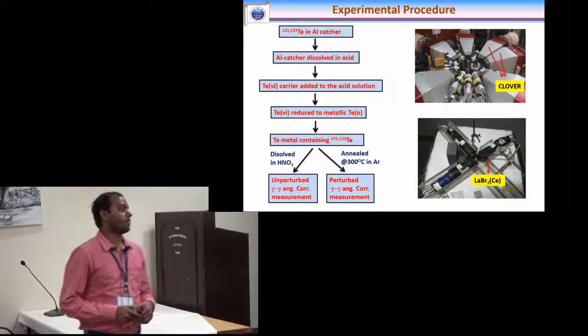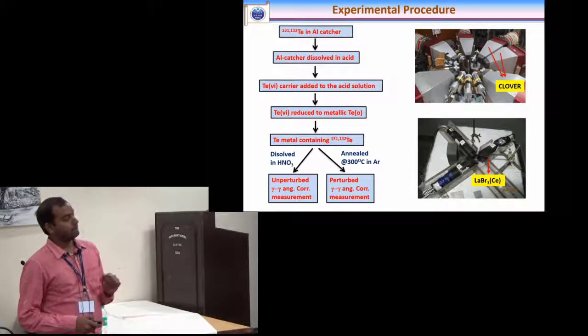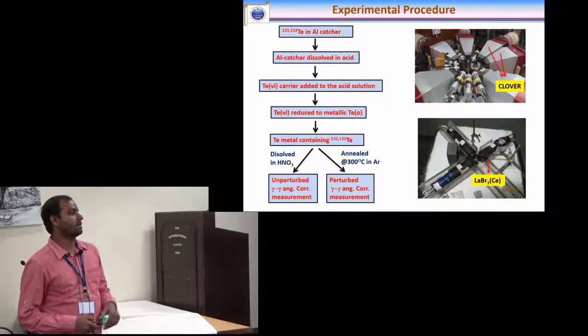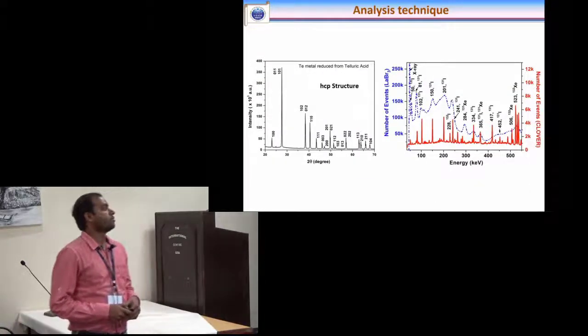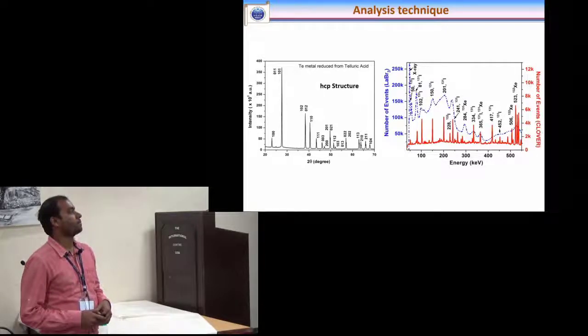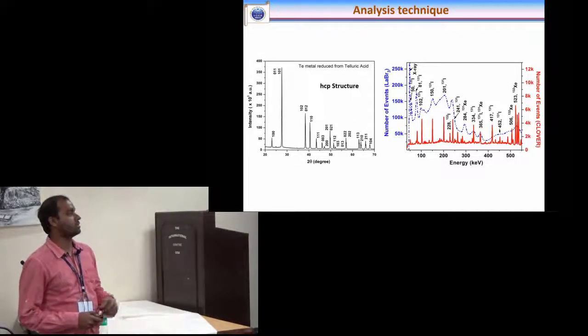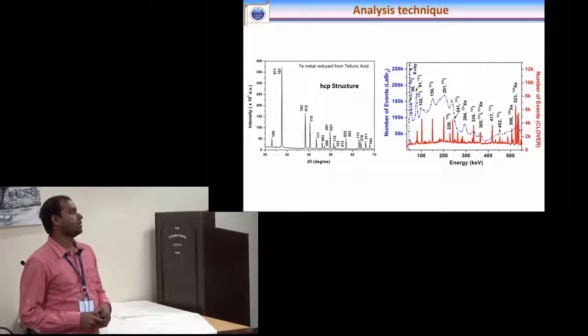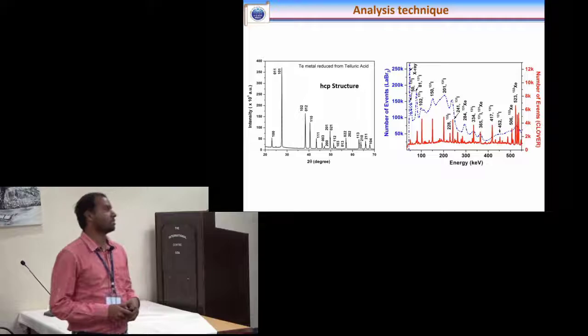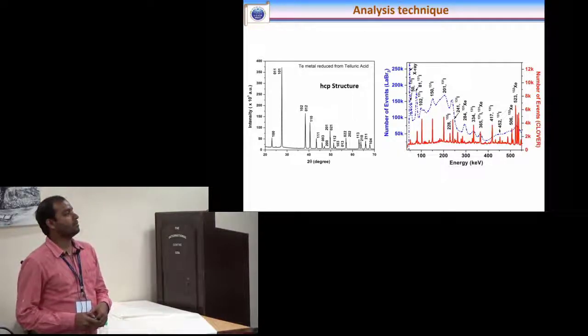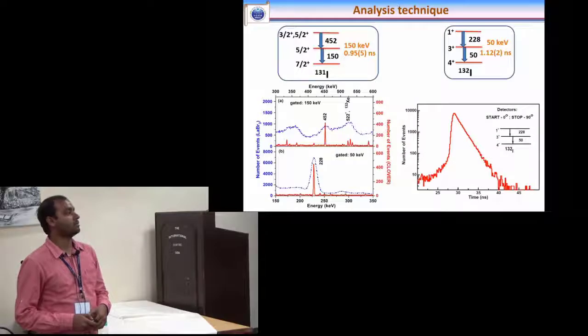Clover detectors help to identify the gamma rays and from the data of lanthanum bromide we measured the quadrupole moment. We have performed XRD on inactive tellurium metal which has been produced in the same chemistry and we saw that it is HCP structure and this is the ungated energy spectrum for both clover and lanthanum bromide detectors.